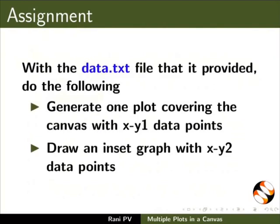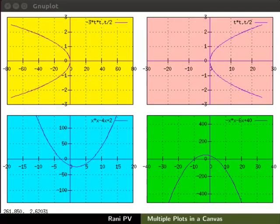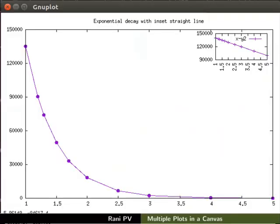With the file data.txt that is provided, do the following. Generate one plot covering the canvas with x-y1 data points. Draw an inset graph with x-y2 data points.